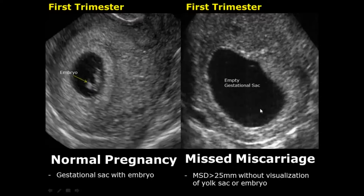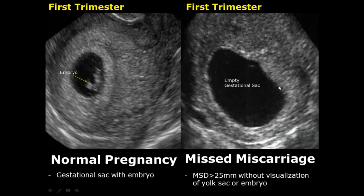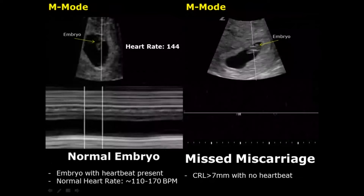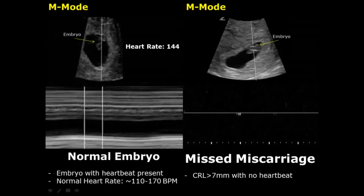A missed miscarriage occurs when there are no clinical symptoms such as vaginal bleeding, but it has some ultrasound features. The first is an empty gestational sac when there is no yolk sac or embryo seen even when the MSD is greater than 25 millimeters. The second feature is a CRL greater than 7 millimeters with no heartbeat — unfortunately in this image there is no heartbeat detected in the embryo.